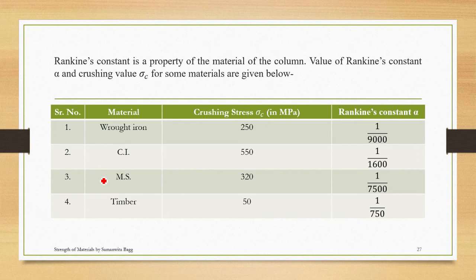You can just go through these values. Suppose if I talk about wrought iron as the material, the crushing stress for it is 250 MPa and the value of alpha is 1 upon 9000. When I talk about cast iron, the value of sigma c is 550 MPa and alpha is 1 upon 1600. Same way for mild steel, the value is 320 MPa for sigma c and Rankine's constant is 1 upon 7500. And timber, the value of crushing stress is 50 MPa and Rankine's constant is 1 upon 750. You can just remember these values; in case for solving numericals, you can use it.